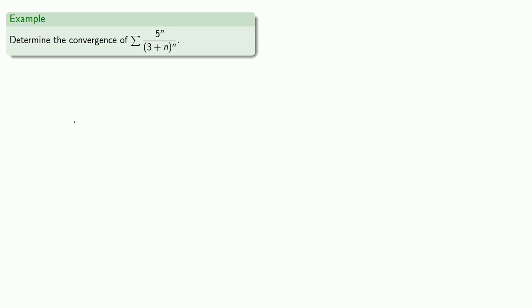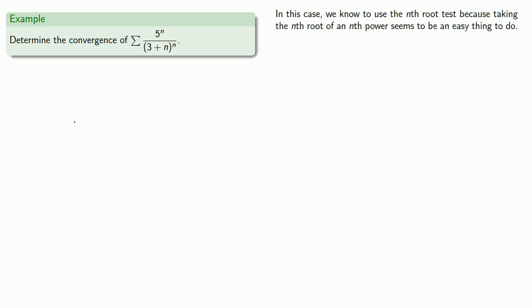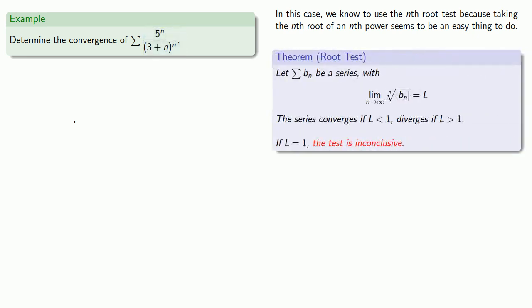Let's try to determine the convergence or divergence of the series whose terms are 5 to the n over (3 plus n) to the n. The first important question is which convergence test to use. In this case, we use the n-th root test because taking the n-th root of an n-th power is straightforward. So we want to find the limit as n goes to infinity of the n-th root of the absolute value of our terms.